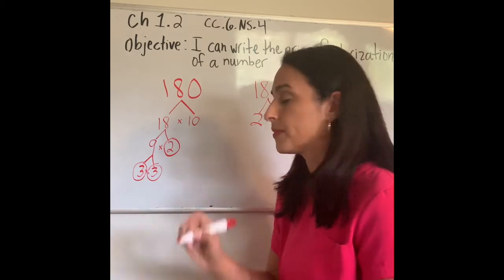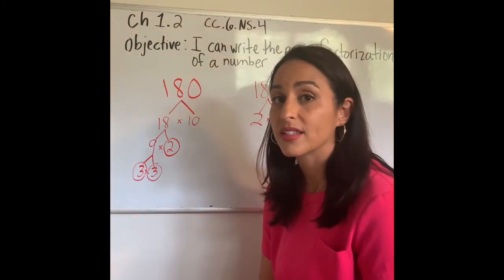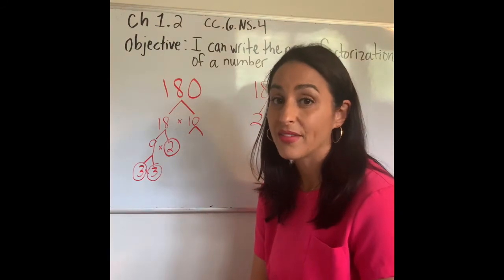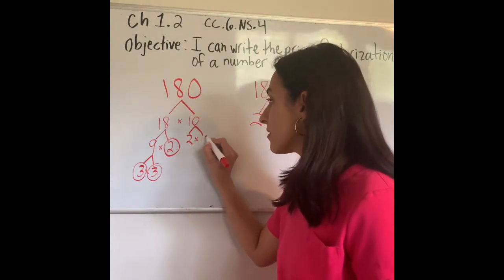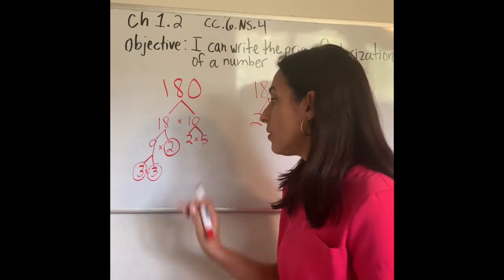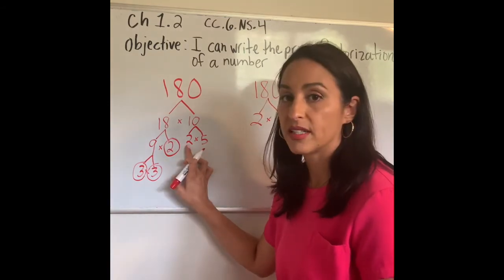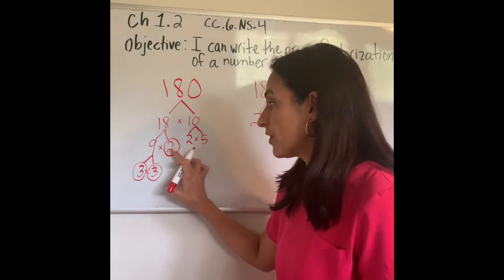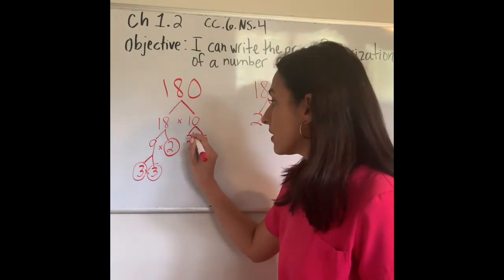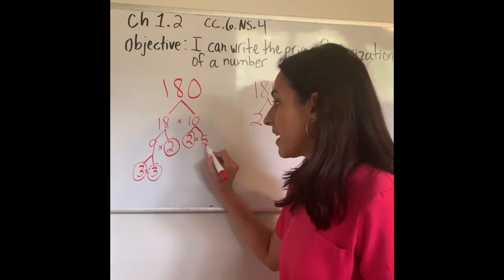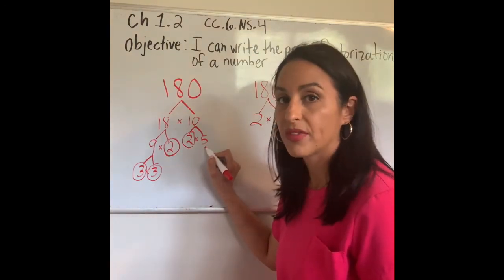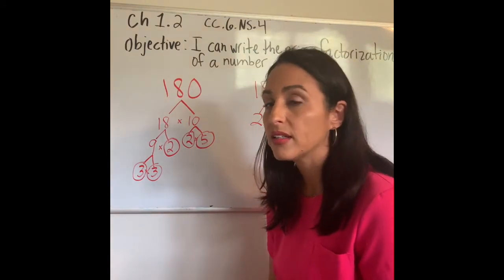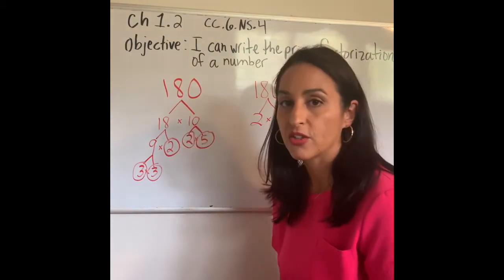Now let's go to 10. Yes, it's composite — because 2 times 5 gives me 10. So 2 times 5. Now I move to my left and see if I can decompose that number. 2 — we learned that 2 is a prime number, so I'm going to circle it. 5 — can I break down 5 anymore? No. 5 is prime. So I'm all done with my prime factorization of 180.